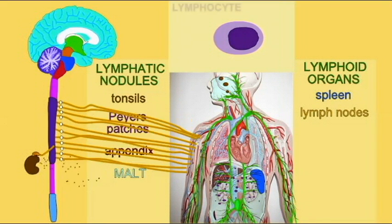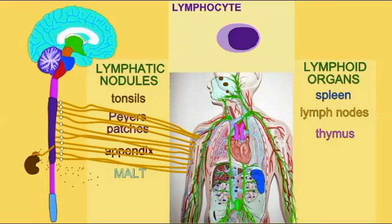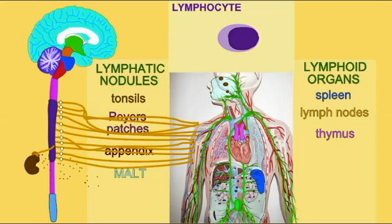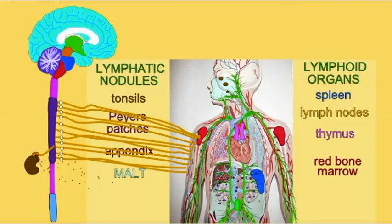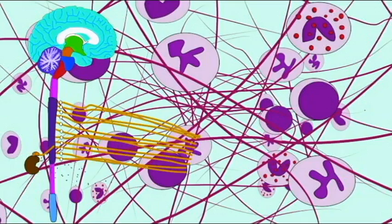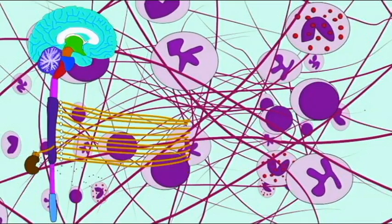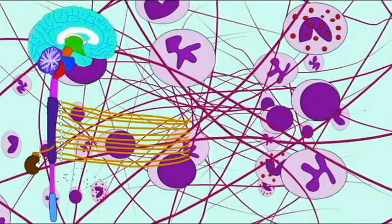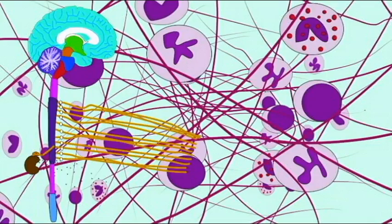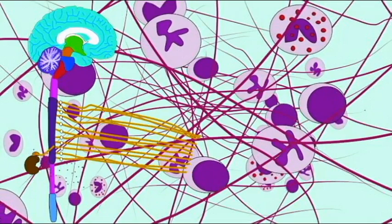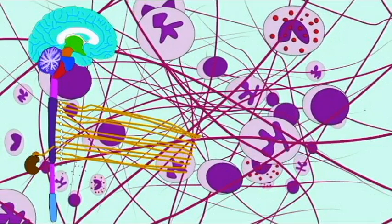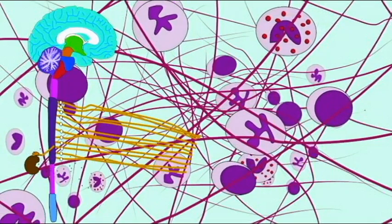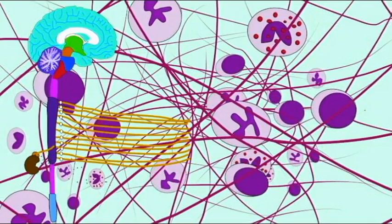This innervation is observed in the spleen, in lymph nodes, in the mucosa-associated lymphatic tissue throughout the body, including the GI tract and the bronchi, and even in tertiary lymphatic structures, which form during chronic inflammation.